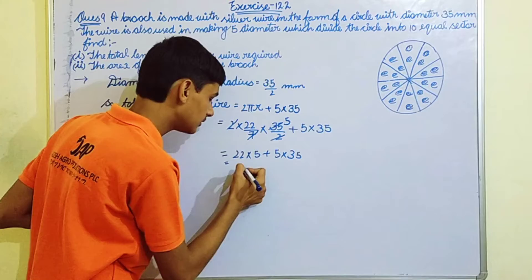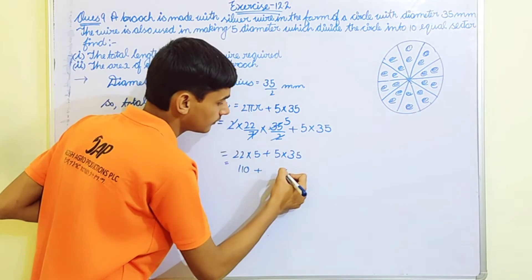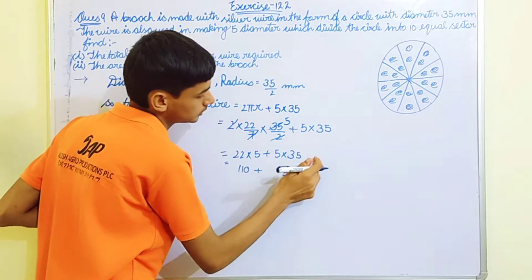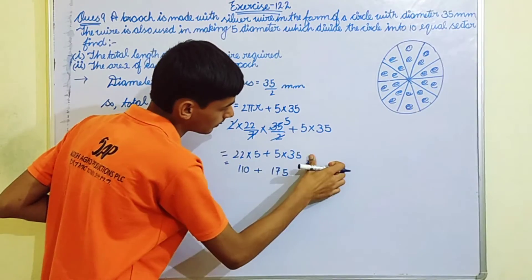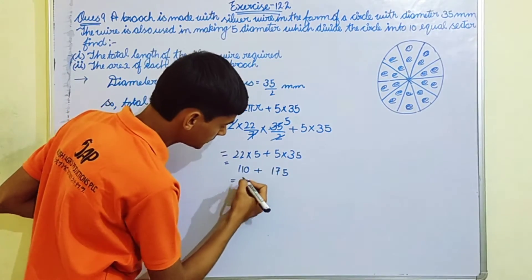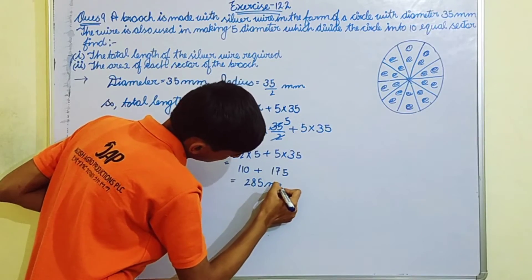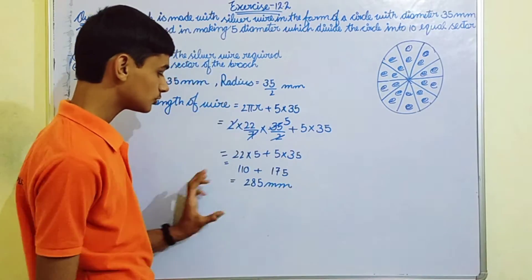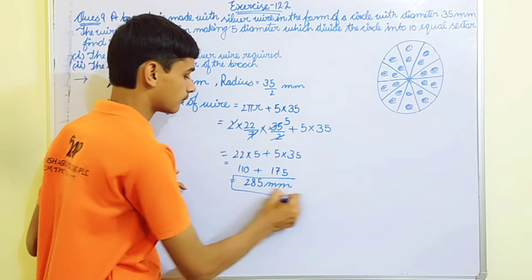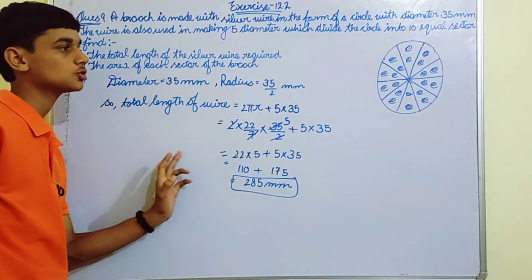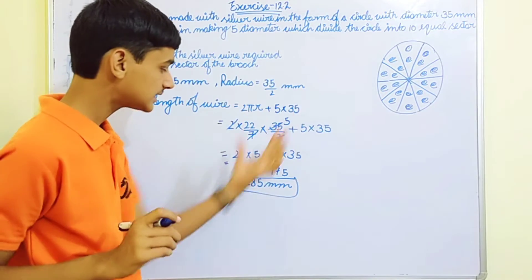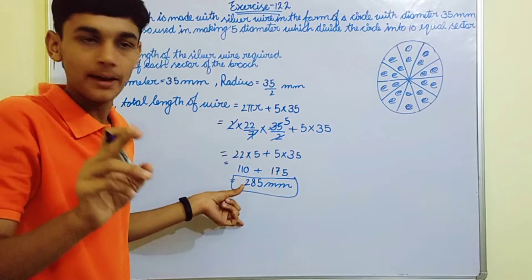That gives us 110 plus 175 equals 285 mm. So this is the length of the silver wire that is used to make this circular brooch, 285 mm.